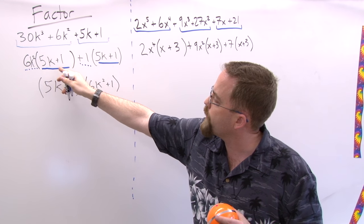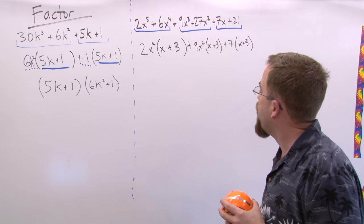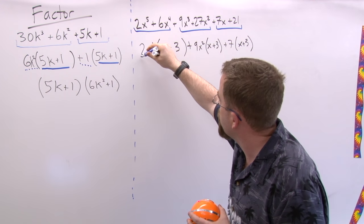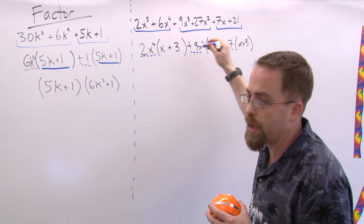So you all see how in the same way that both of these terms had a 5K plus 1, in this one all three of the terms have an X plus 3. So I'm gonna grab these parts over here, and the pluses or minuses would matter a lot. I ended up with the same thing each time.